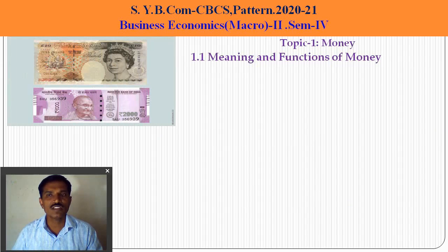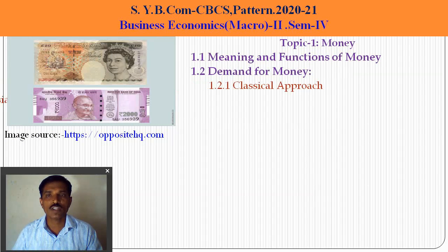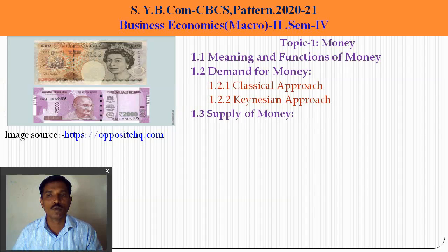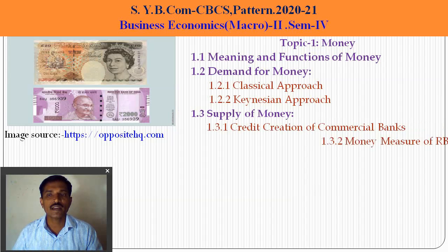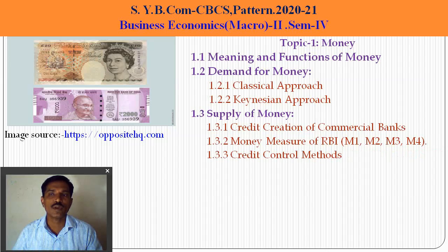In this chapter, we learn many points. First is the meaning and function of money, and various definitions given by economists. Then 1.2 is about the demand for money — the classical approach and the Keynesian approach. Then supply of money from the central bank, credit creation function of commercial banks, and money measures of the RBI: M1, M2, M3, M4, and credit control methods adopted by the central bank.